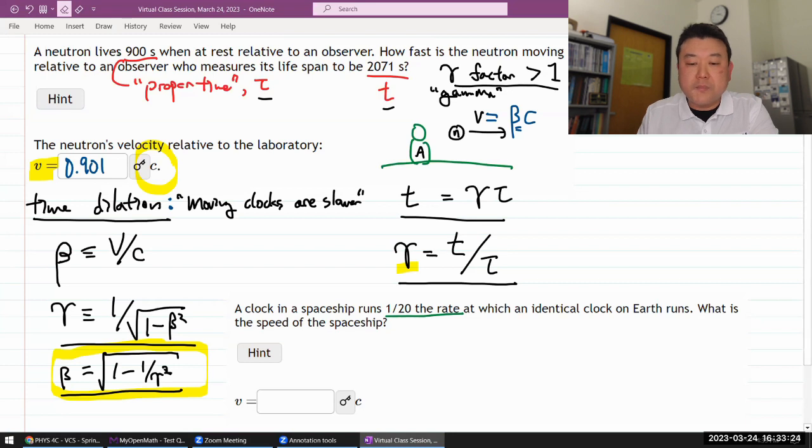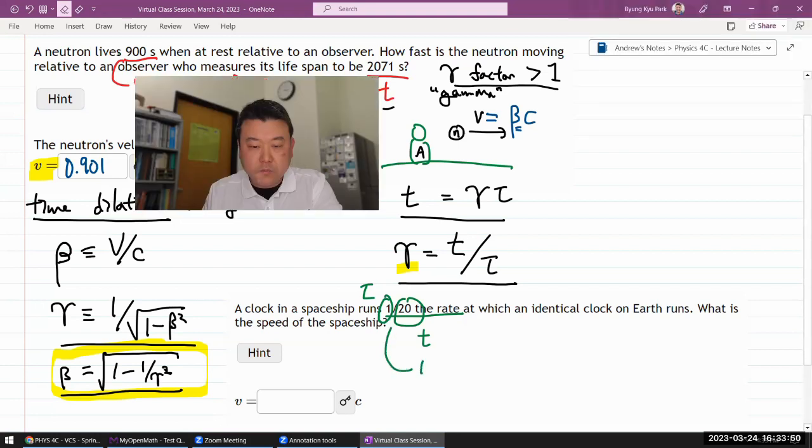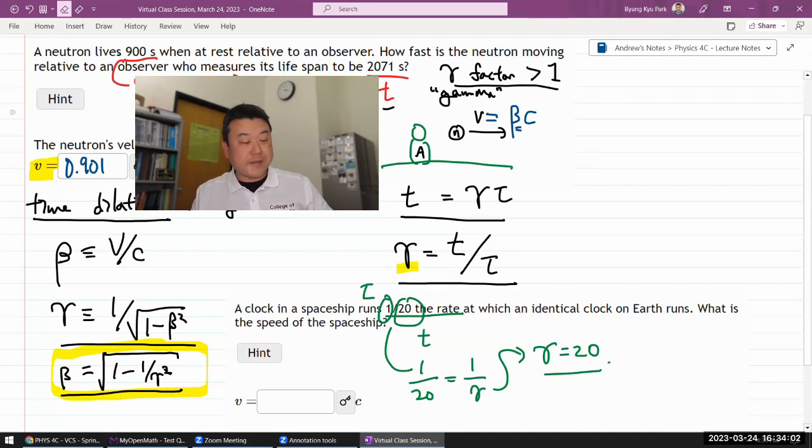I think that means in the amount of time, let's say the identical clock on Earth runs, let's say ticks down 20 seconds. So this is the time in the reference frame of Earth, the proper time for the clock on the spaceship goes 1 second. So this would be tau. So thinking back to here, that means the number that they've given 1 over 20th, that's 1 over gamma. Or solving it, gamma is equal to 20.